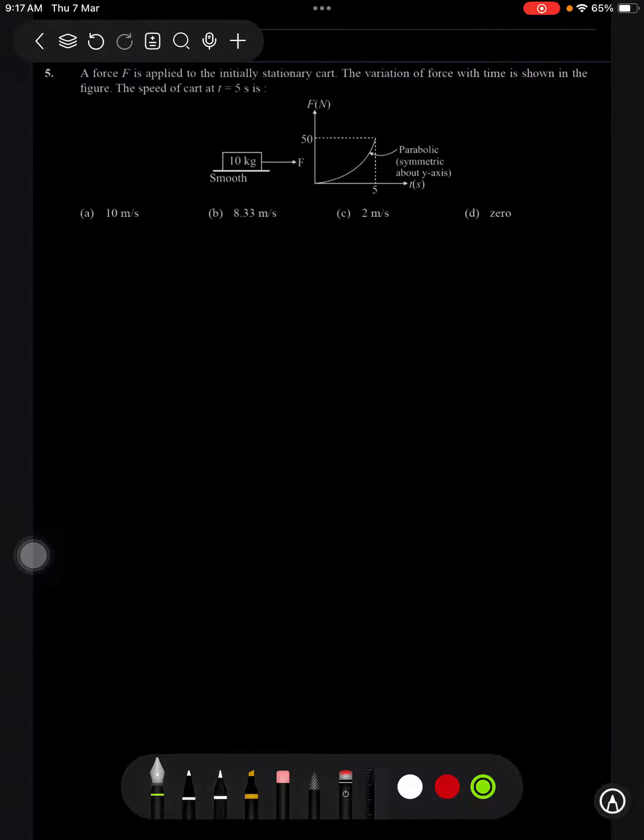Question number 5 from laws of motion DPP. It states that a force f is acting on an initially stationary cart. So u value is 0. The variation of the force with time is shown in the figure. The speed of the cart at t equals 5 seconds.